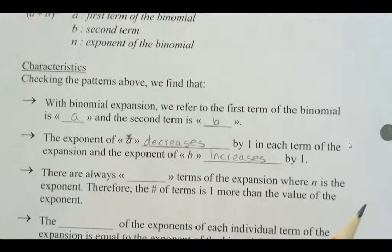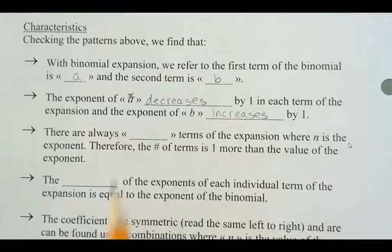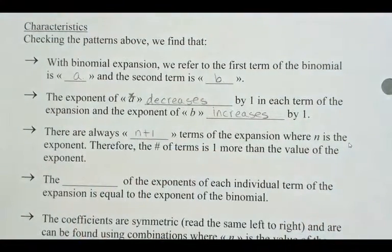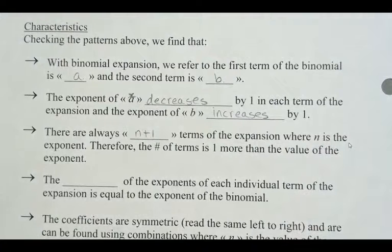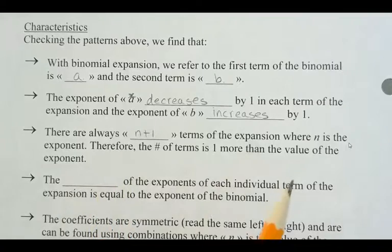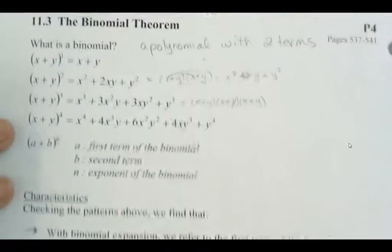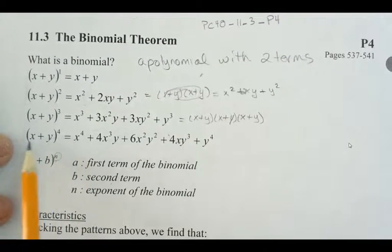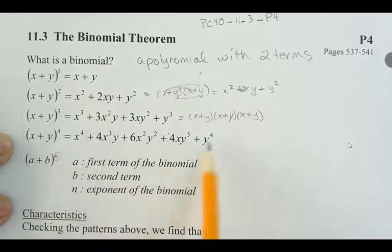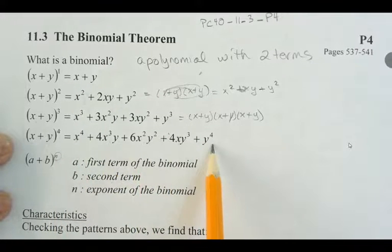Okay, so there are always N plus one terms of the expansion where N is the exponent. So when we have an exponent, if we slide back up, how many terms do we have for this fourth one here where we have an exponent of four? We have one, two, three, four, five terms there. You see that? So we have N plus one terms when we've expanded.